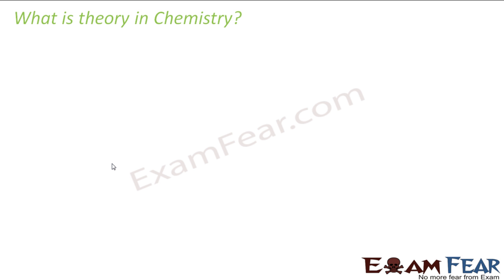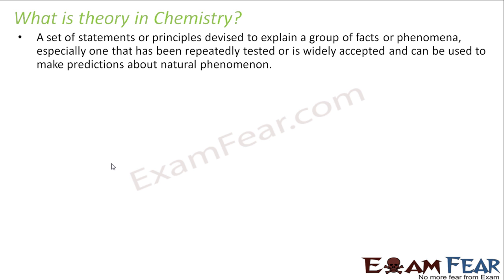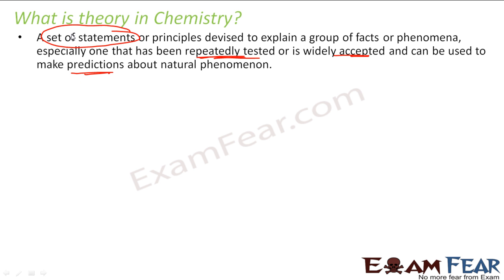Let's understand what a theory is in chemistry. A theory is nothing but a set of statements or principles devised to explain a group of facts or phenomena, found through repeated testing, widely accepted, and can also be used to make future predictions.